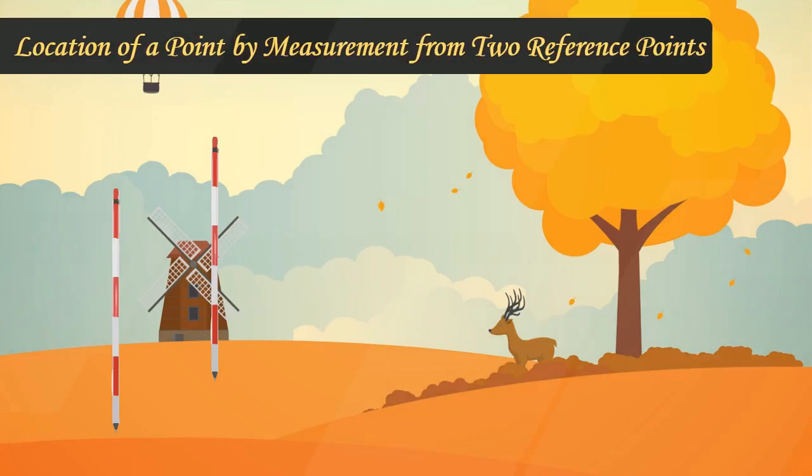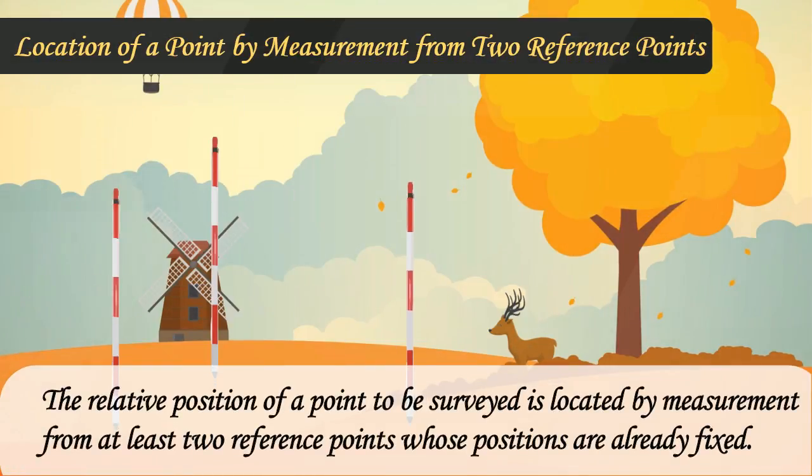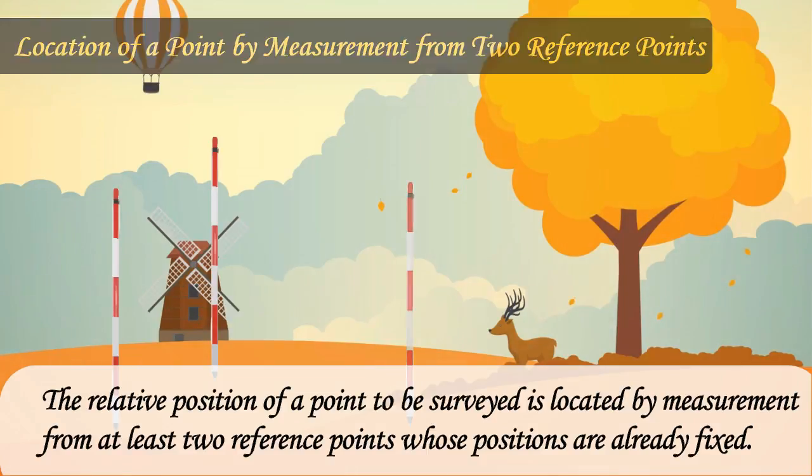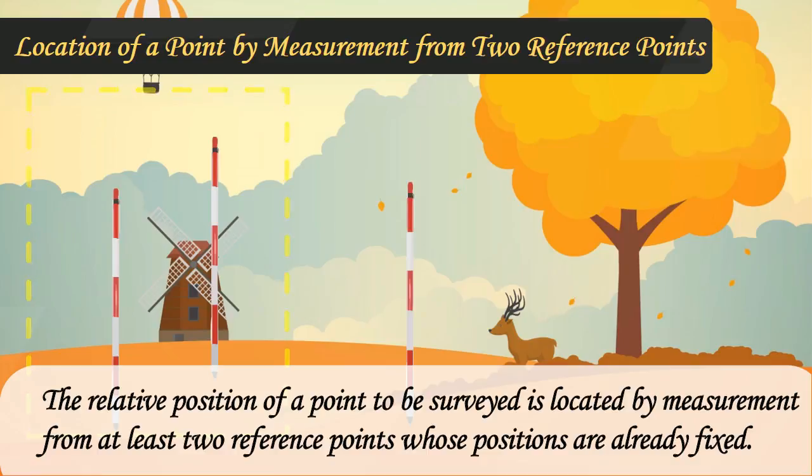Location of a point by measurement from two reference points. The relative position of a point to be surveyed is located by measurement from at least two reference points whose positions are already fixed.